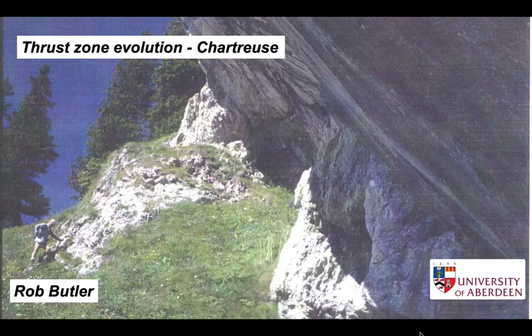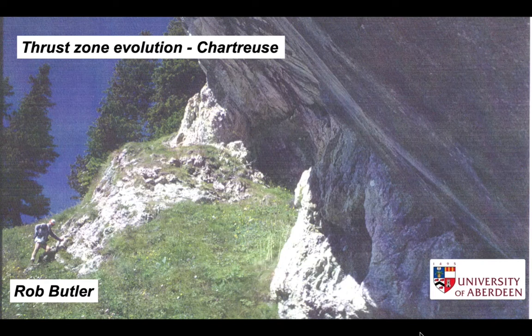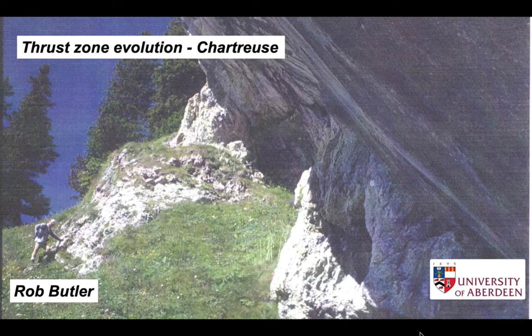When looking at cross sections, we might be tempted to think that thrust zones are really narrow features represented by just thin lines. These discrete zones have accumulated lots of displacement, perhaps localised earthquakes, and in the field we might expect to recognise these as narrow features upon which the rocks are highly shattered and broken. Actually, natural thrust systems can be rather more complicated than this. So here we're going to look at the evolution of thrust zones using examples from the Chartres district of the subalpine chains of South East France.